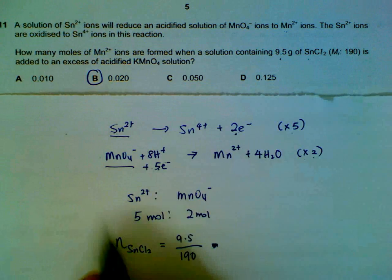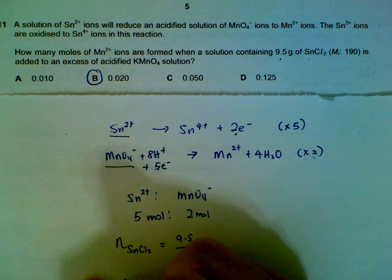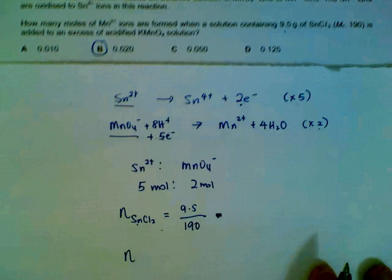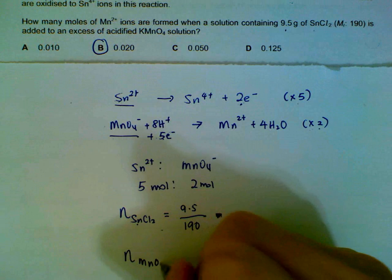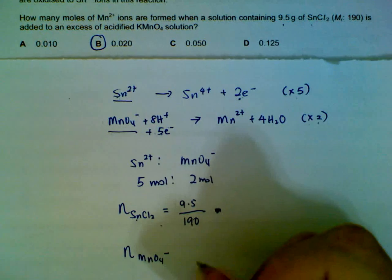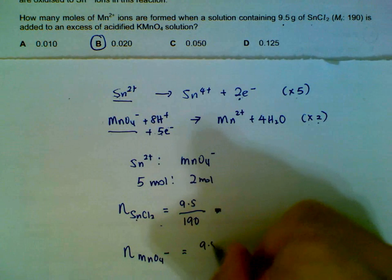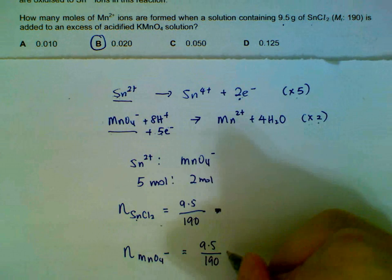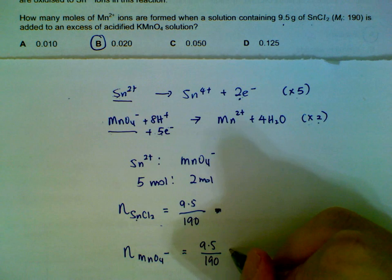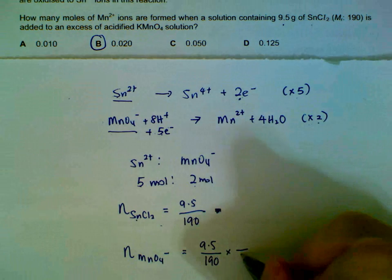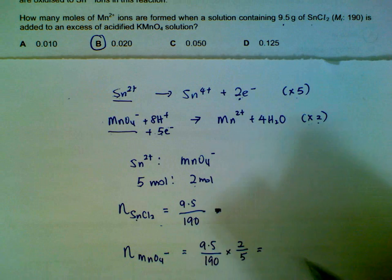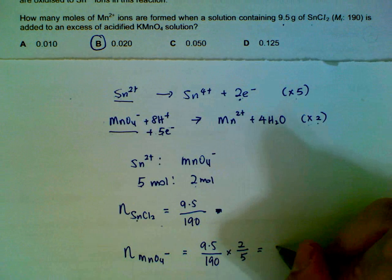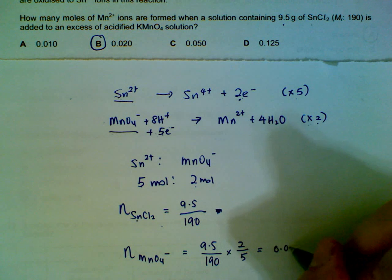We can go to the MnO₄⁻. This is the moles of SnCl₂. Your moles of MnO₄⁻ is actually whatever your moles of SnCl₂ is, divided by 5, multiplied by 2. And if we work it out with the calculator, we will have 0.02 moles.